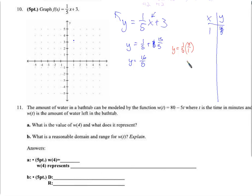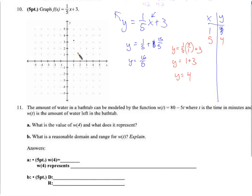If we put in 5 for x: one fifth times 5 over 1 — the fives cancel — we just get 1. So y equals 1 plus 3 equals 4. Now we've plugged in something whole for x and got out something whole for y — the point (5, 4), which is really easy to plot.